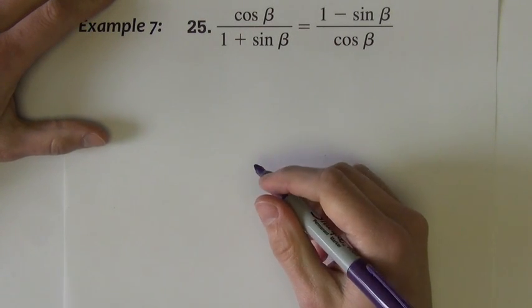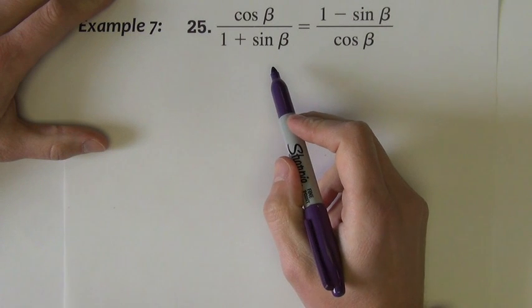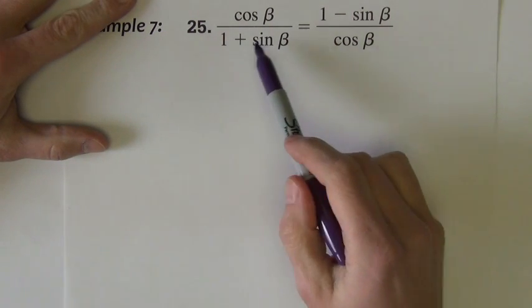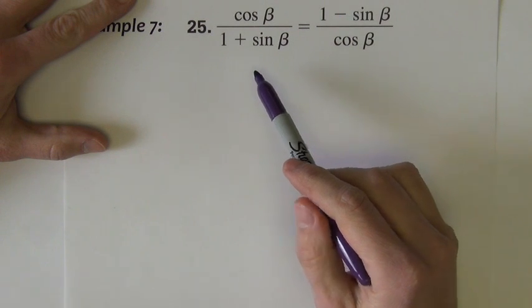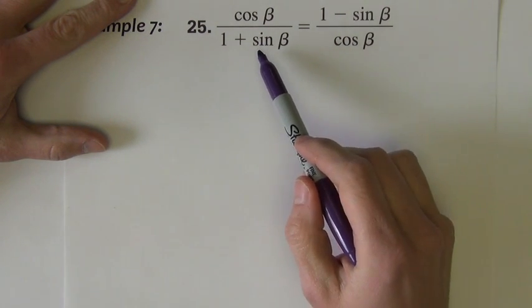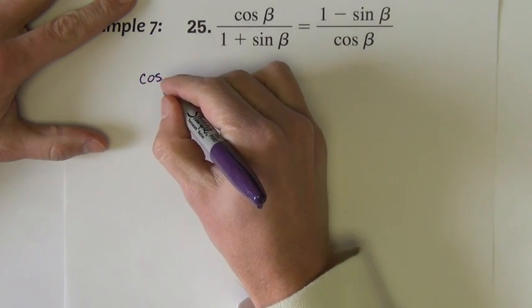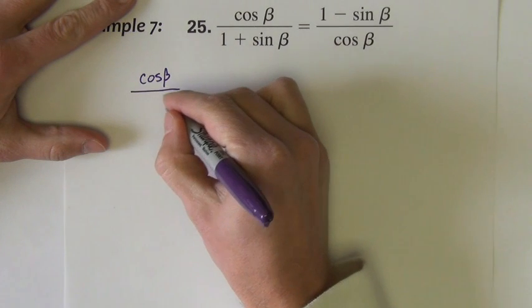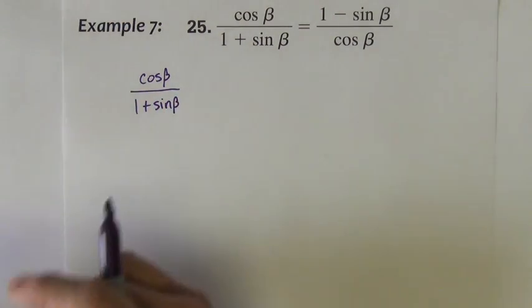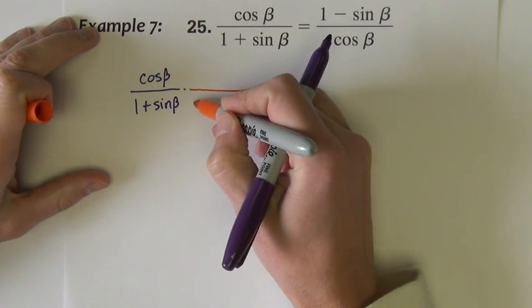In this next example, you can see that each side of the equation are pretty similar to each other already. So really, the side that you work on is probably not going to matter here at all. I'm going to go ahead again and just work on the left. I'm going to try and make this side look like this side. And the way I do it in this particular problem, I'm going to multiply top and bottom by a conjugate pair of the denominator.